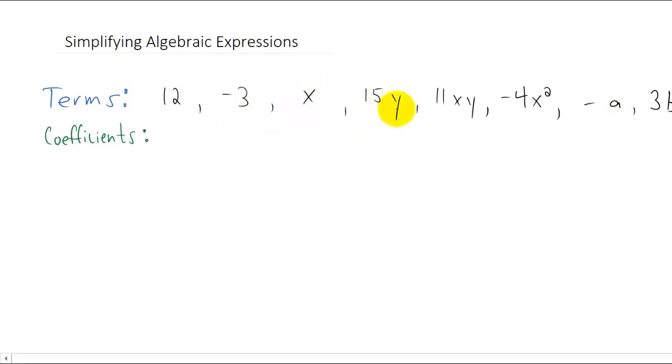So, for example, this term is called 15y, and this term is called 11xy. This term is just called x. So, what's the number on that term? Well, it turns out that there is a one associated with that term there.